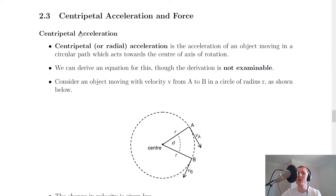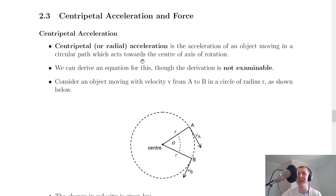We're going to start by looking at centripetal acceleration and then move on to centripetal force. There's a definition here for centripetal acceleration, otherwise known as radial acceleration. Centripetal acceleration is the acceleration of an object moving in a circular path which acts towards the centre of axis of rotation. So what we mean is the acceleration is acting towards the centre, not that the object is moving towards the centre.